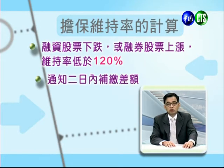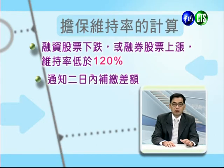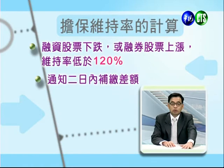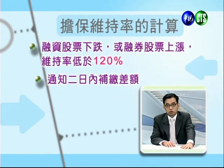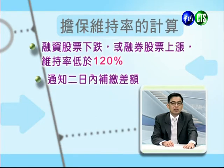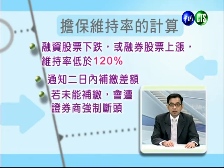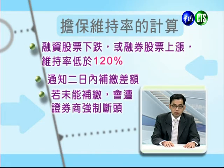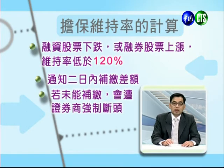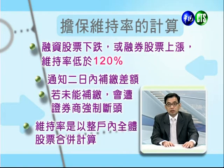接下来谈到担保维持率的计算。融资股票下跌、融券股票上涨，维持率低于120%的状况下就会被断头。融资是希望股票上涨，如果下跌；融券是希望股票下跌，如果反方向上涨，都会让融资维持率低于120%。这种情况下证券公司会通知你，必须在两天之内补缴差额；未能补缴就会遭到强制断头，也就是强制将你的融资股票卖出或融券股票买回。